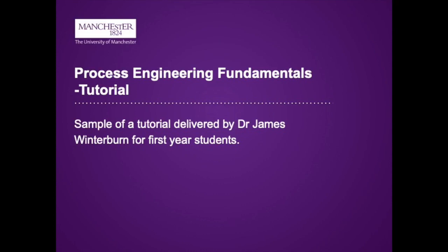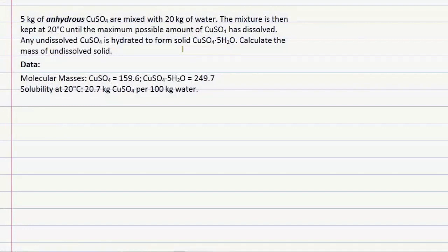In this question, we're dealing with the dissolution of copper sulfate in water. Five kilos of anhydrous copper sulfate are mixed with 20 kilos of water. This mixture is agitated and kept at a constant temperature of 20 degrees Celsius until the maximum possible amount of copper sulfate has been dissolved. Any remaining undissolved copper sulfate is hydrated and forms solid copper sulfate 5-hydrate. The question asks us to calculate the mass of any undissolved solid.